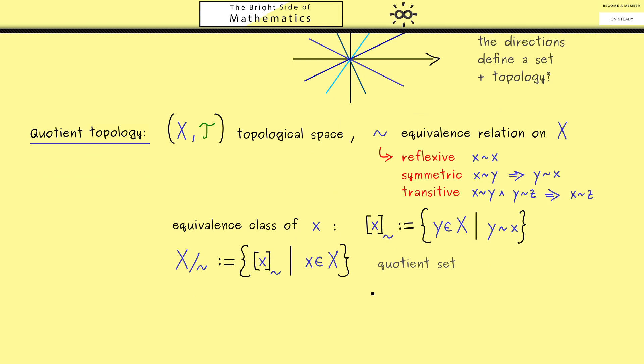You will see this immediately in the next example. Now I can tell you, some people call this set the quotient set X by the equivalence class tilde. However, you already know we are not interested in the set itself, but in the set together with the topology. And now the question remains, how do we define a new topology here?